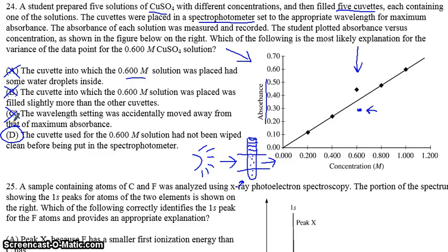The cuvette used for 0.6 molar solution had not been wiped clean. So if our cuvette has a bunch of fingerprints on it, then those fingerprints will actually absorb some of the light. And it will show a higher absorbance than usual. So that is the best explanation for this higher absorbance. Some of the fingerprints absorbed some of the light, essentially.